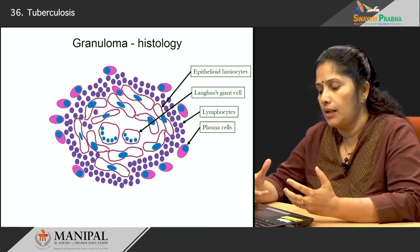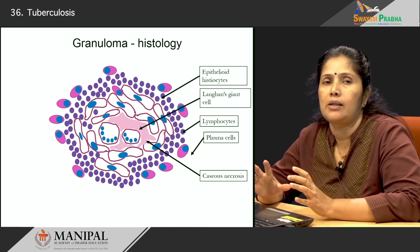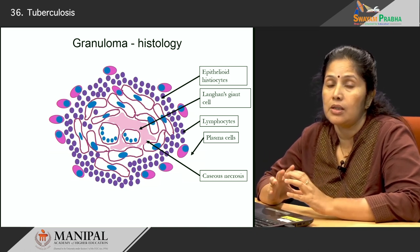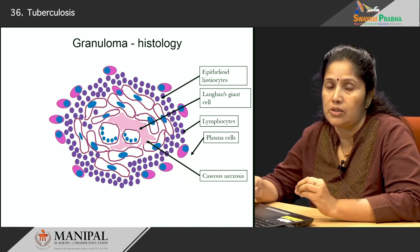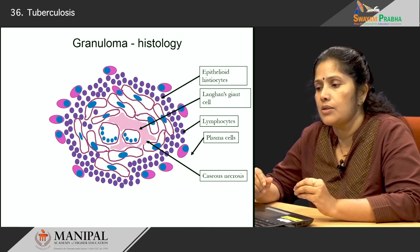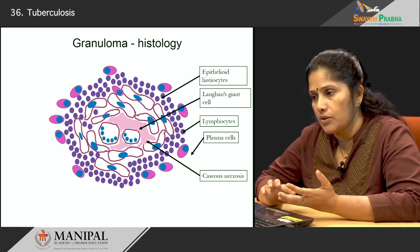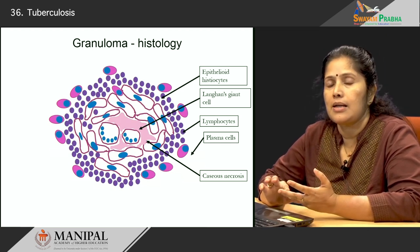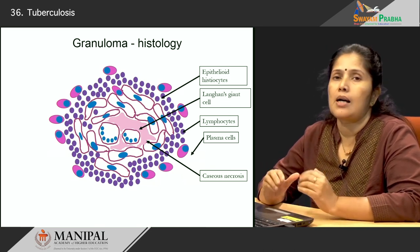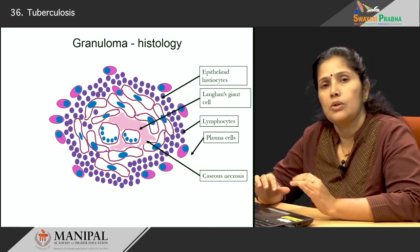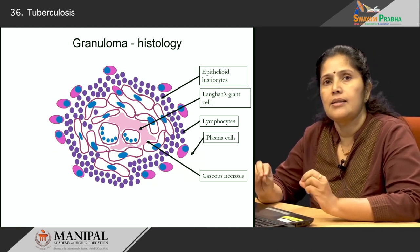As this granuloma becomes larger, another important feature is the central pink area known as the zone of caseous necrosis. Caseous necrosis is another very important finding which, when seen in the histology or biopsy, helps diagnose tuberculosis. The presence of epithelioid histiocytes, Langhans giant cells, caseous necrosis, lymphocytes, and plasma cells is highly diagnostic of tuberculosis.